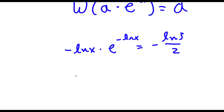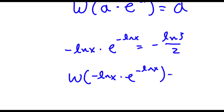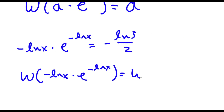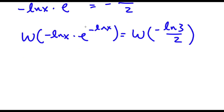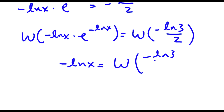Now we can go ahead and take the W Lambert function on both sides. So now I have W of negative ln x times e to the power of negative ln x is equal to W of negative ln 3 over 2. This is simply equal to a, which is negative ln x in this case. So now I have negative ln x is equal to W of negative ln 3 over 2.